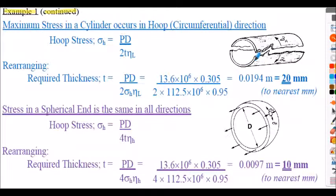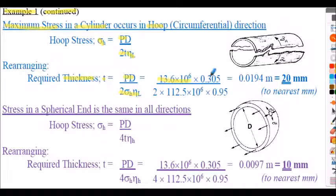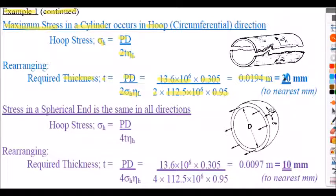To calculate the required cylinder thickness, we consider the maximum stress — the hoop stress: σ_h = pd/(2t × η_L). Rearranging for t: t = pd/(2 × σ_h × η_L). Inserting values: p = 13.6×10⁶ Pa, d = 0.305 m, σ_h = 112.5×10⁶ N/m², η_L = 0.95, giving t = 0.0194 m = 19.4 mm.